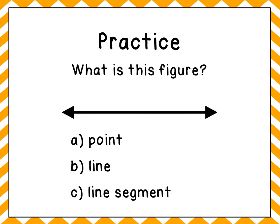And if you chose B line, you are correct. Because as you can see, it has an arrow on this side, and an arrow on this side, telling us that it's going to continue on in both directions.